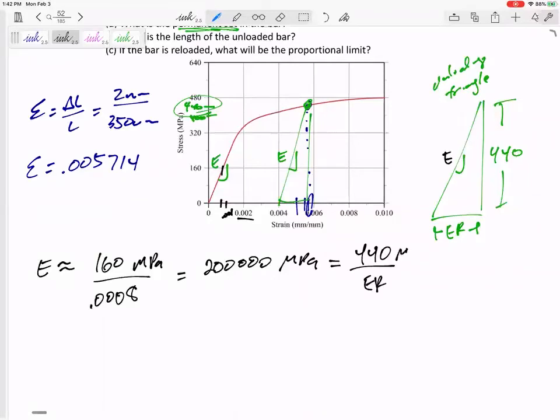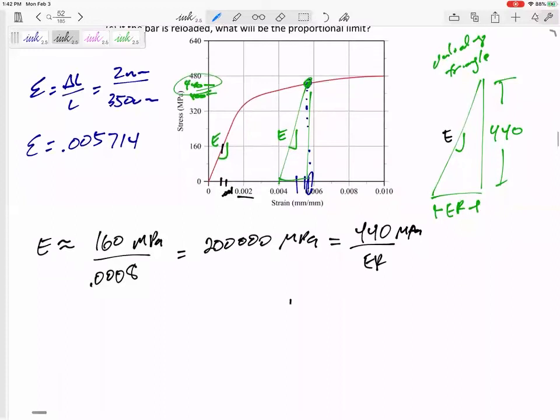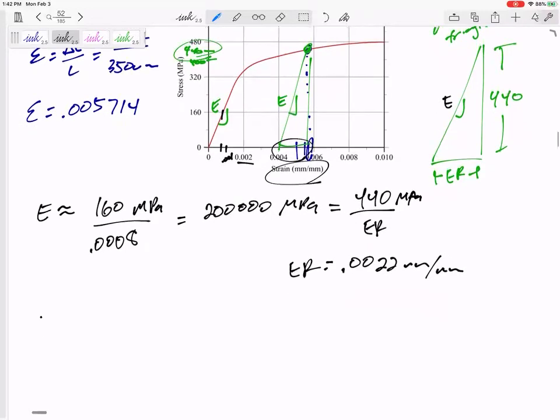We can get through here. So the elastic recovery is .0022 millimeters per millimeter. The base of this triangle is a strain. That's not an actual length. That's not in millimeters. That's in strain, in millimeters per millimeter. So the permanent strain: I was at .005714, I recovered .0022. So I'm left with a strain of .00351 millimeters per millimeter. So that is the permanent strain.